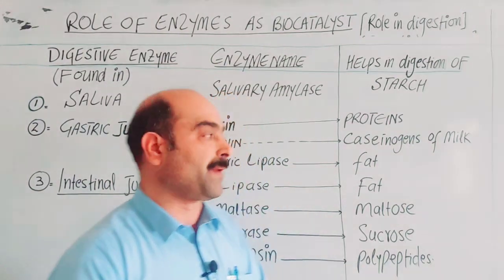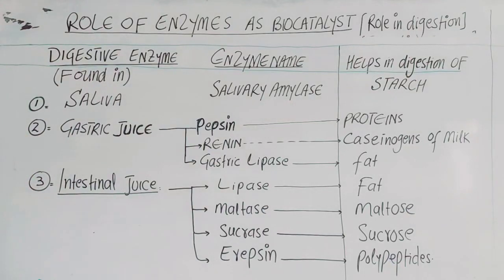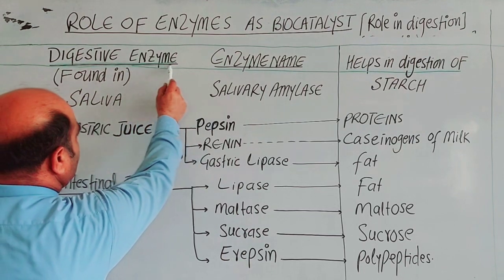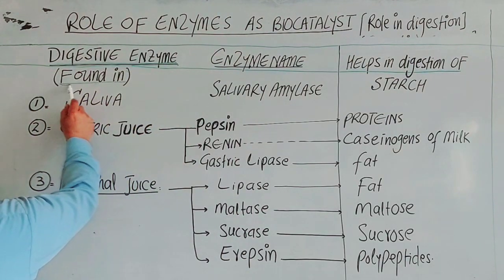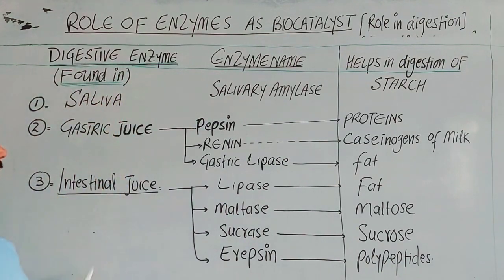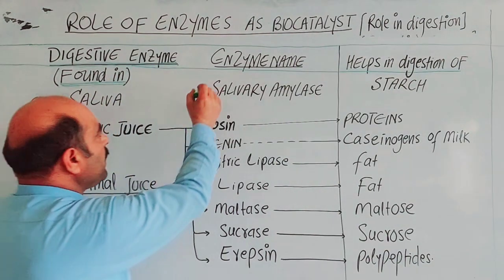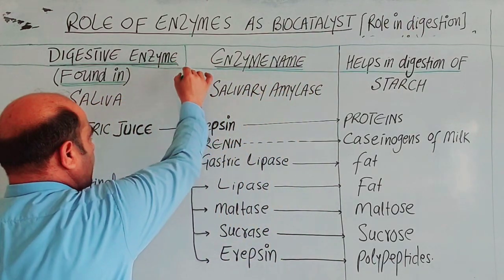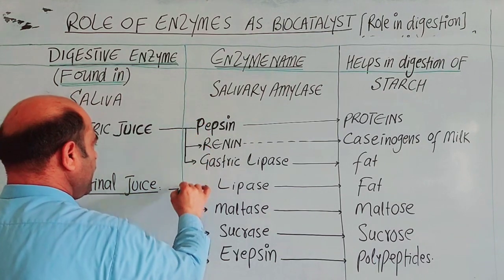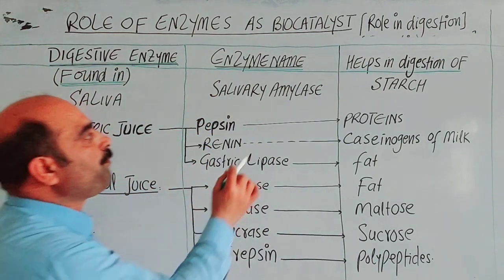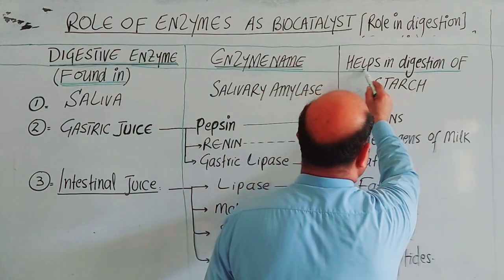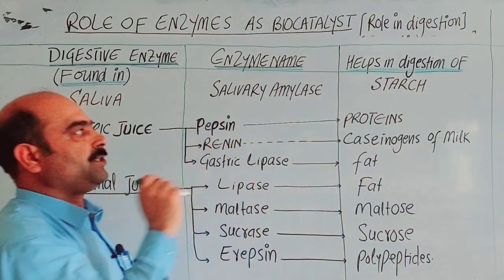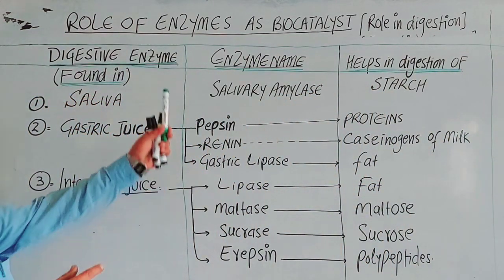Now students, let's look at a table. In this table, the first column shows where the enzyme is found in the body, the second column shows the enzyme name, and the third column shows which food item that enzyme helps to digest.